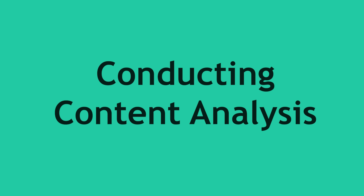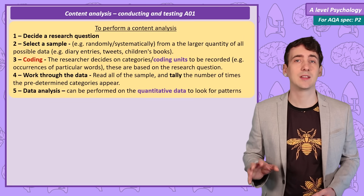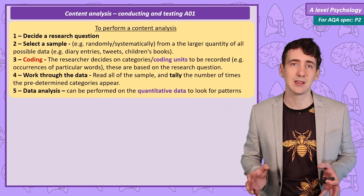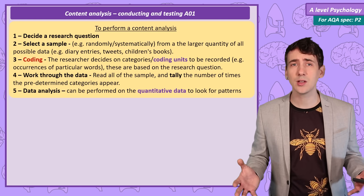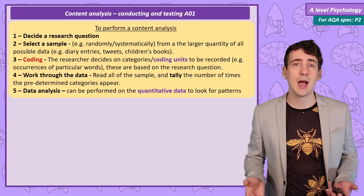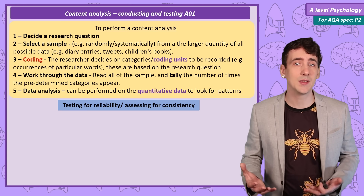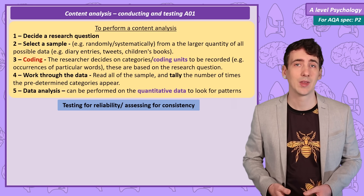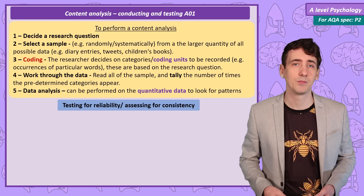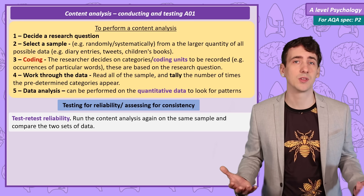Conducting a content analysis and testing for reliability. If you were asked to complete a content analysis, this is what you would do. Firstly, you would need to decide measurable categories to record, linked to the content you've collected — so for example looking for sexist references in a set of interviews or advertisements. Then you would carefully work through the recordings or pages and tally each time one of the categories appears. You may also want to check the reliability of the content analysis — that is, is it repeatable? Do you get the same data doing it again? Is it consistent? Test-retest reliability would involve running the content analysis again on another occasion with the same set of data and comparing the results.